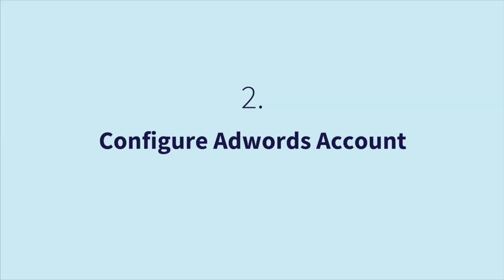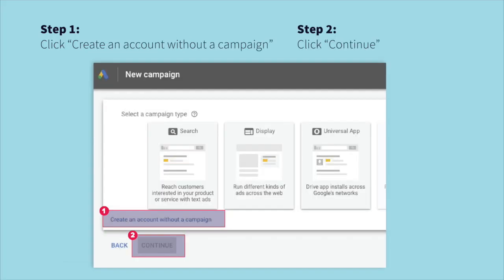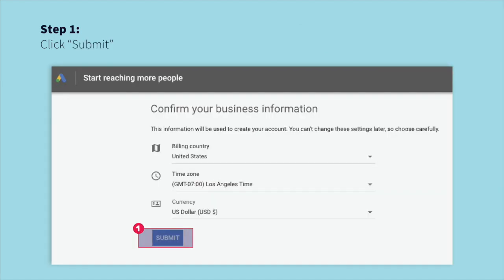Next, we'll need to configure your AdWords account. Once you accept the invitation, you should be taken to a page that looks like this. All you need to do is click Experienced with Google Ads, then click Create an account without a campaign and select Continue. Then you'll want to enter your billing country, time zone, and the currency preference, and click Submit.